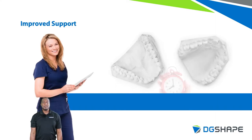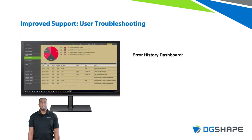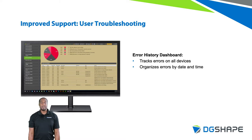Backlog is a word used in dental businesses for understanding dental cases that have not been completed on time. When it comes to digital milling processes, recurring user mistakes can cause multiple days of lost production. With DW Index 2, you can stay on top of recurring device operation issues that affect your productivity. The Error History Dashboard allows you to track errors on all devices, organizes errors by date and time, and ranks errors by frequency, including ones that can be avoided through proper machine use. No business should experience downtime due to a missing burr or an open door — now you can track all occurrences and reduce mill downtime.